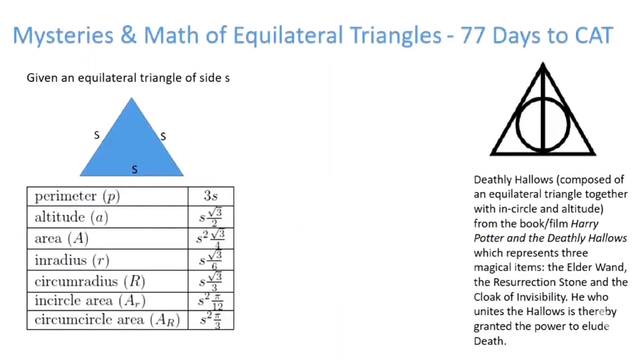Alright, welcome you all to Mysteries and Maths of Equilateral Triangle, 77 Days to CAT. Deathly Hallows, as you all know, was made up of an equilateral triangle. Yes, it had an encircle and an altitude as well. Now from that trivia, let's head straight to Maths of Equilateral Triangle.